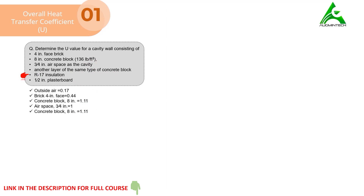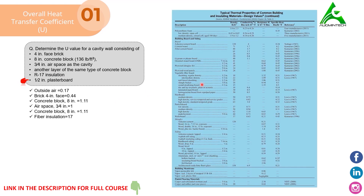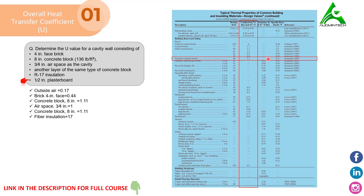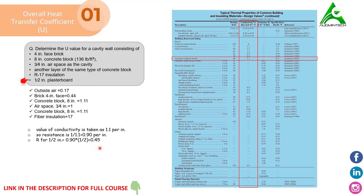Then we find the resistance of R-17 insulation. Because R-17 is mentioned, it simply means the resistance can be taken as 17. For the half-inch plasterboard, we use the same chart, selecting the row for gypsum or plasterboard and the column for conductivity since resistance is not directly mentioned. We get the conductivity value of 1.1, making the resistance 0.9 per inch for 1 inch. For half-inch, it is simply half of that, giving us a resistance of 0.45 for the half-inch plasterboard.